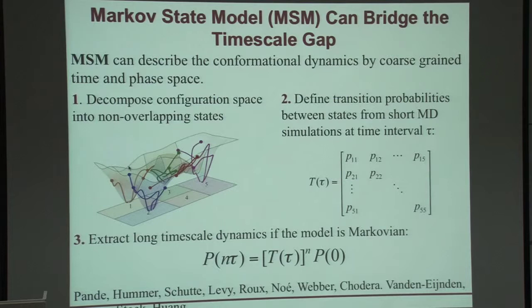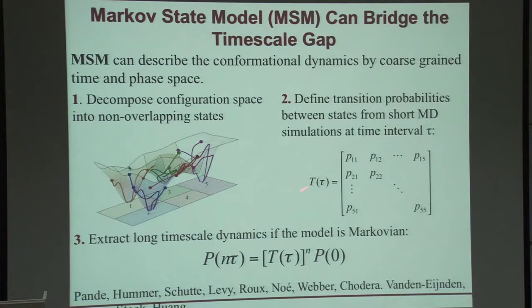The idea of the Markov State Model is pretty simple. We coarse-grain the phase space and coarse-grain the time simultaneously. For example, if you look at a two-dimensional system, you can decompose it into five states. If you directly decompose in configuration space, it will introduce memory and your model will not be Markovian. So we also simultaneously coarse-grain the time. We have this separation of time scales where, if you select the correct lag time, you can make your model Markovian. Eventually we obtain a transition probability matrix — or rate matrix — which is an N-by-N matrix; for five states you have a five-by-five matrix. All these probabilities can be obtained from many short simulations, and detailed balance has to be satisfied.